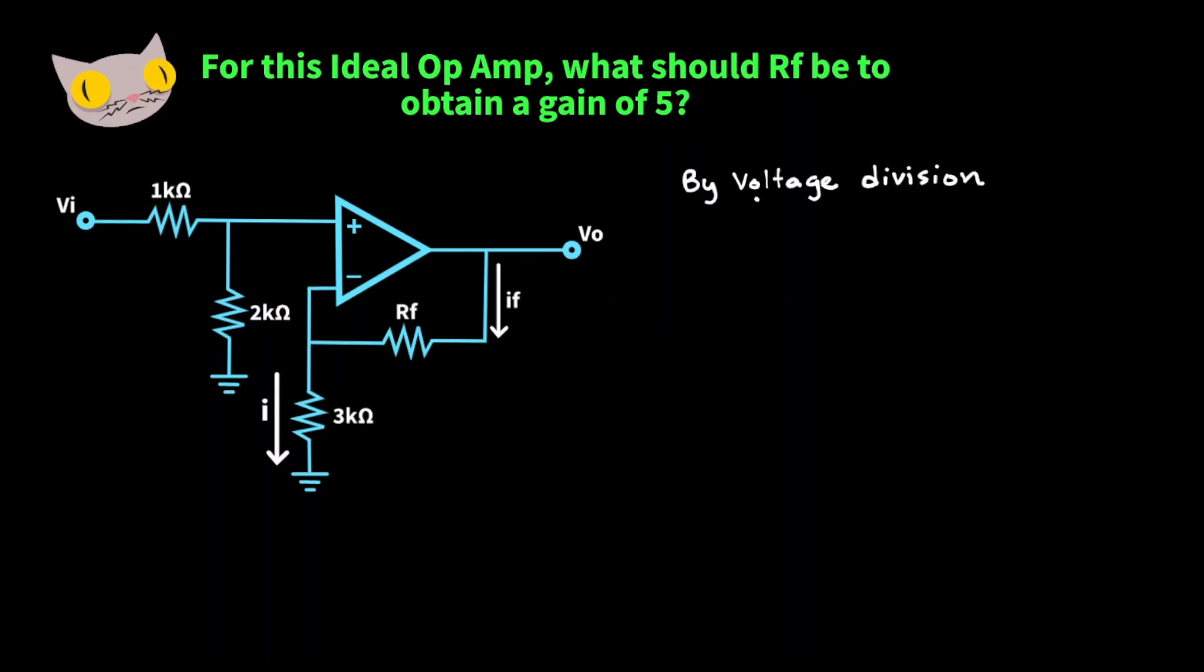By voltage division, we know that the voltage at VN on the positive side of the op-amp, right here, is VI times 2k ohms over 3k ohms. We can write that as two-thirds VI.